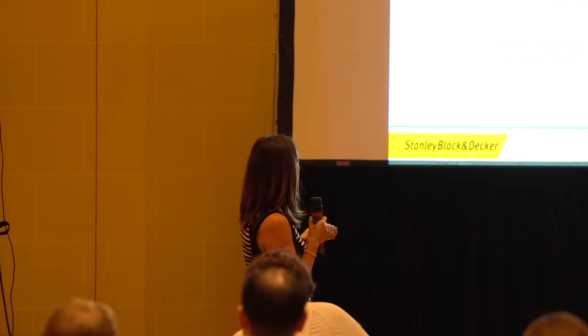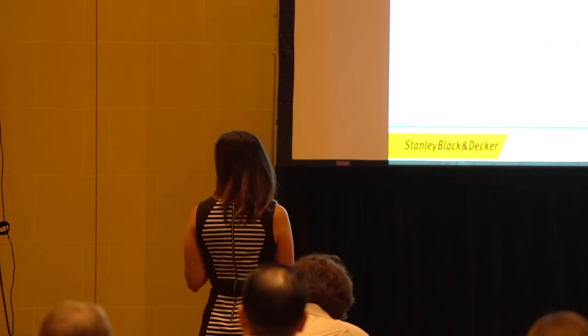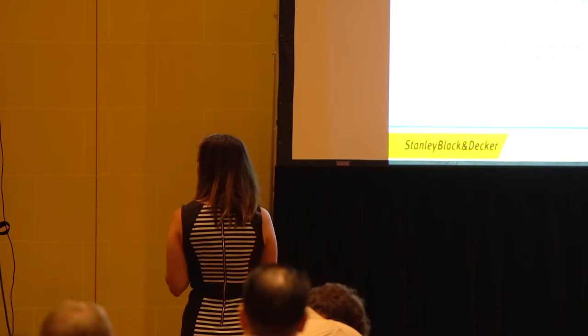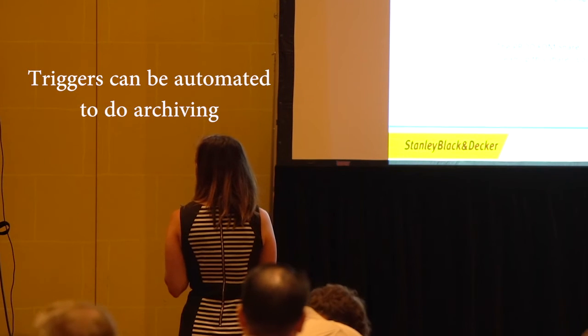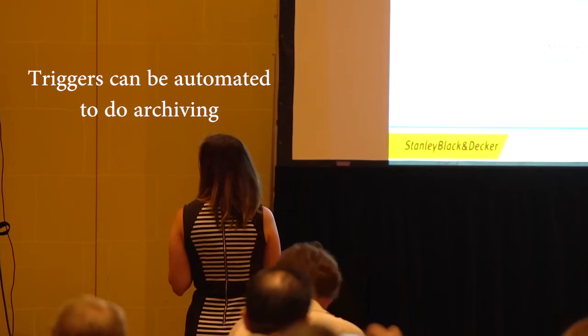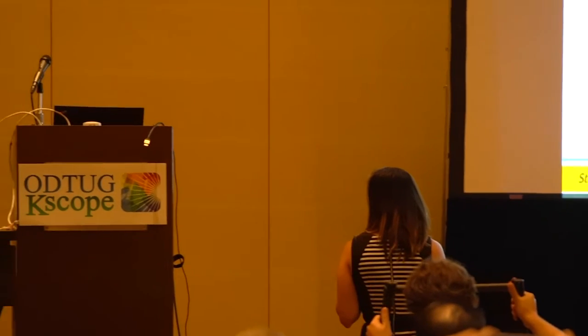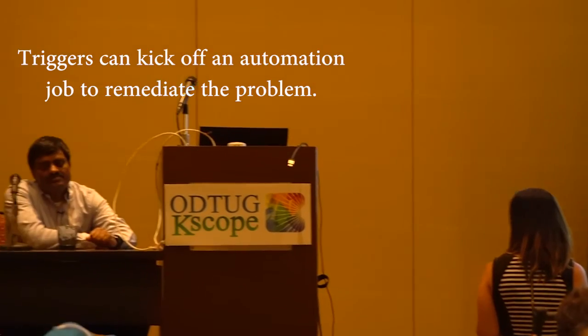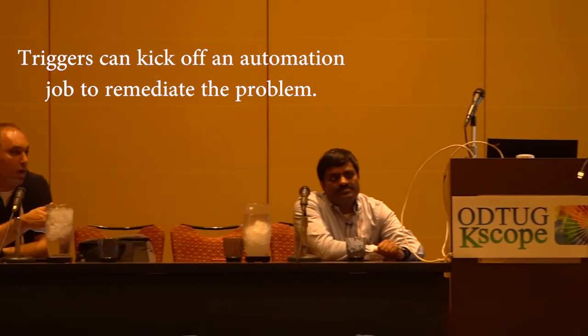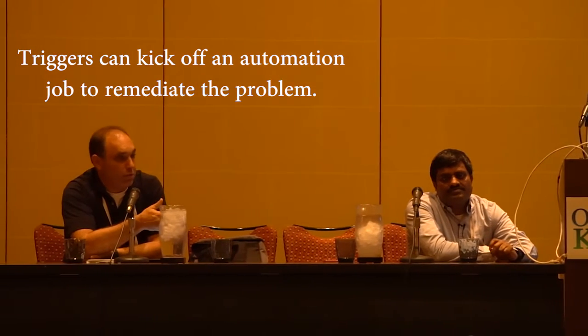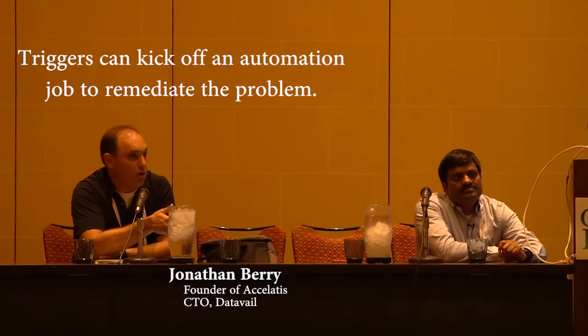There is an opportunity we haven't discussed, though, which is that you could take that trigger and then tie it to an automation job to actually do the archiving. It depends on your internal process, but the value is a trigger could kick off an automation job that could remediate the problem — whether you want to handle it manually or want the system to do some of it for you.